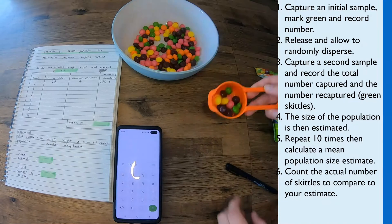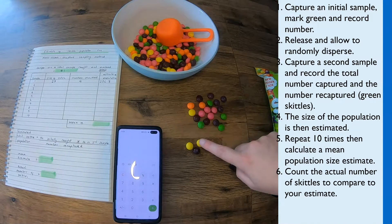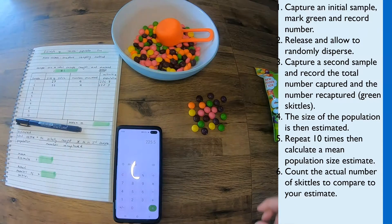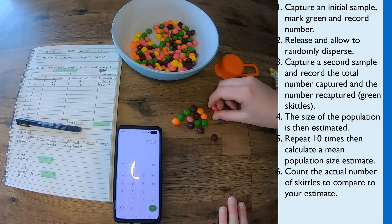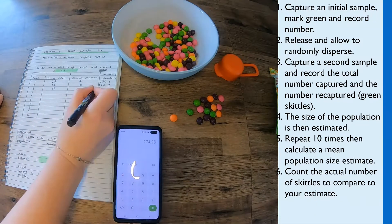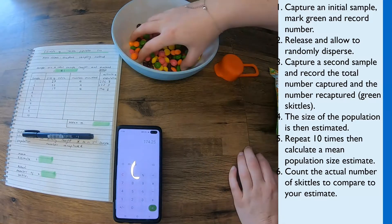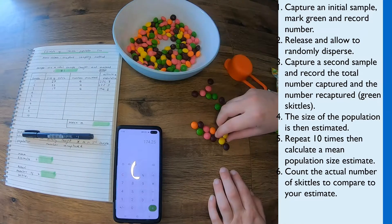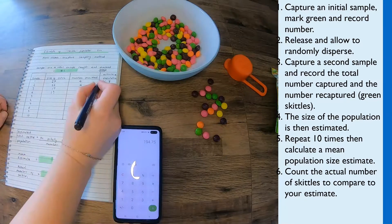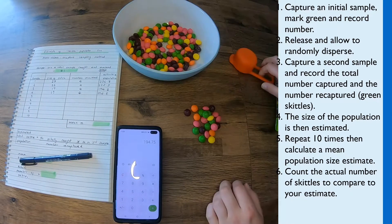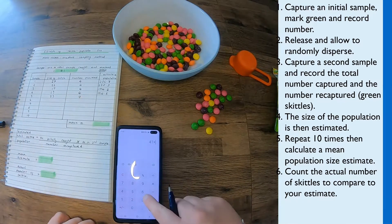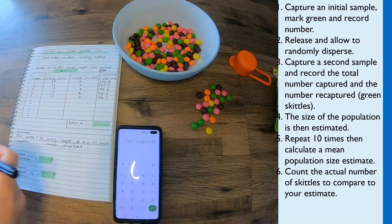Then I'm doing it for a second time, and this time we can see in the table there were 22 in the catch, four of which were green that I recaptured. Now this is going to go on to get 10 samples in total, and that's because the more repeats you have, you should end up with a more accurate mean.